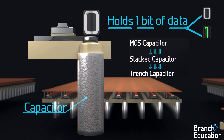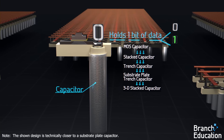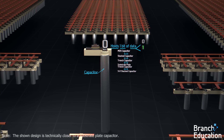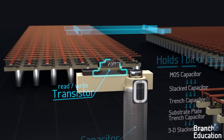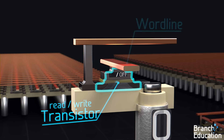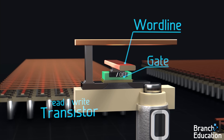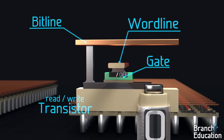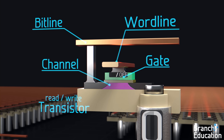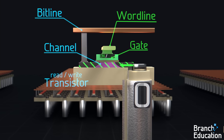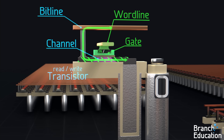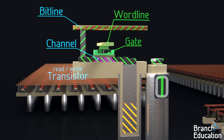Designs of capacitors are constantly evolving, but in this trench capacitor, the depth of the silicon is utilized to allow for larger capacitive storage while taking up as little area as possible. Next, let's look at the access transistor and add in two wires. The wordline wire connects to the gate of the transistor, while the bitline wire connects to the other side of the transistor's channel. Applying a voltage to the wordline turns on the transistor, and while it's on, electrons can flow through the channel, thus connecting the capacitor to the bitline.